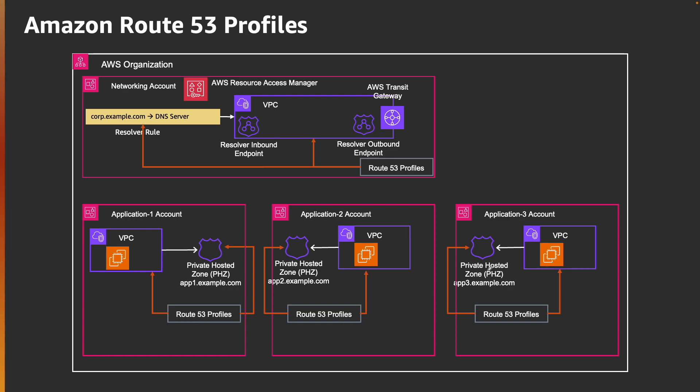You can manage everything from a central place in the networking account. You just associate the profile with the VPC and the private hosted zone in the corresponding account wherever you need. That's all I wanted to show you — how Route 53 profiles can help you manage your DNS configuration, your inbound and outbound resolver endpoints, consolidate everything, simplify your infrastructure, and how you can migrate from your current environment to Route 53 profiles.